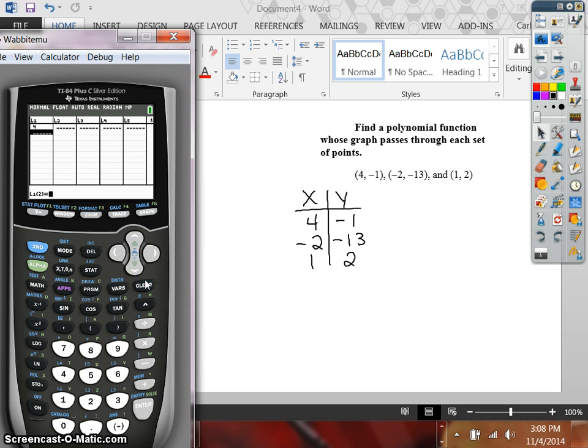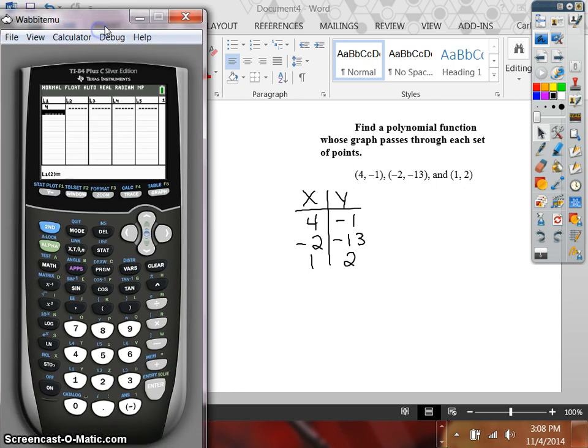And I actually need to move my calculator up a little bit so that I can see my negative button there. So there's 4, negative 2, and 1.